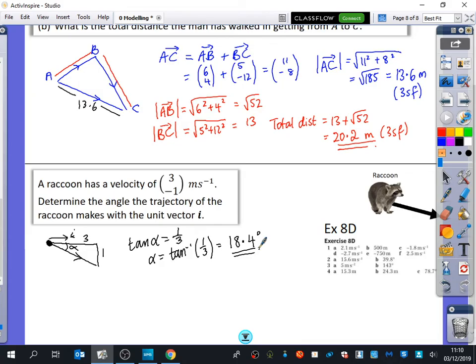What does that answer need added to it to make sure that it's really clear what's happening here? If it said here, determine the angle that it makes with the unit vector i, and I just said 18.4 degrees, you wouldn't necessarily know the way that this raccoon is going. Shahan, what would you need to add to this to make it clear which way the raccoon is going? Would you say below the unit vector i?